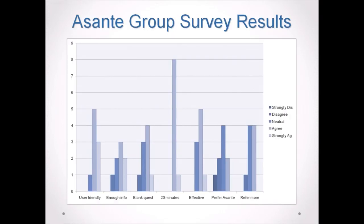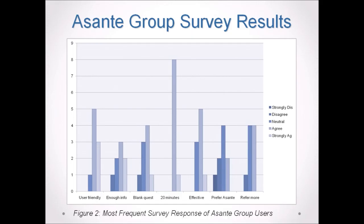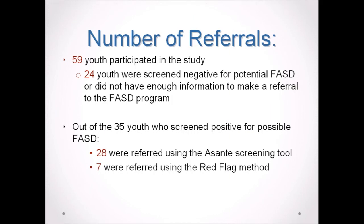The Asante tool probation officer group was asked if the tool was user-friendly, if they could answer the majority of questions with available information, if they left questions blank, if it could be filled out in less than 20 minutes, if it was effective, if they preferred it over their current referral method, and if it generated more FASD referrals than the red flag method. Results showed they agreed the tool was user-friendly, that they had enough information to fill it out in under 20 minutes, and that it was effective. However, they were neutral on whether they preferred it over the red flag method or whether it actually generated more referrals.